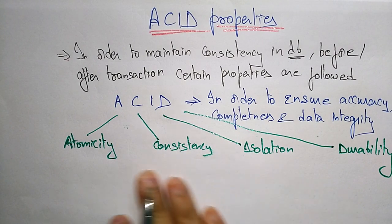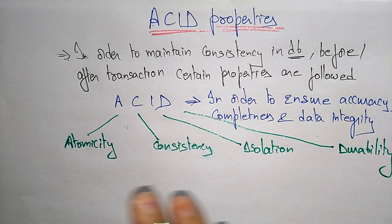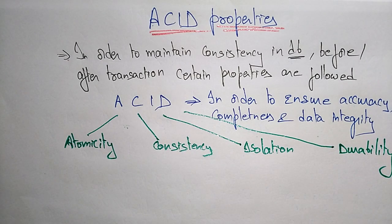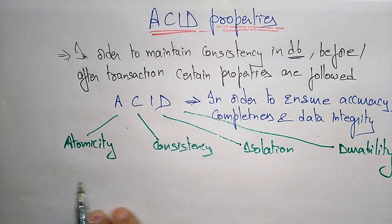If a transaction satisfies all these properties, then you can say that the database is in a consistent state — it is following the correct procedure and has accurate, correct values. So: Atomicity, Consistency, Isolation, and Durability.